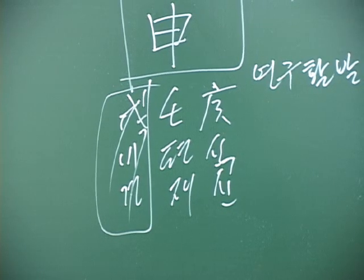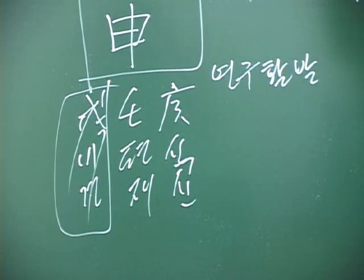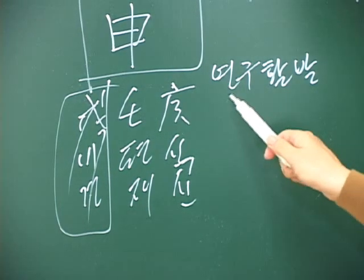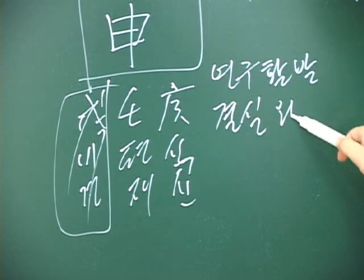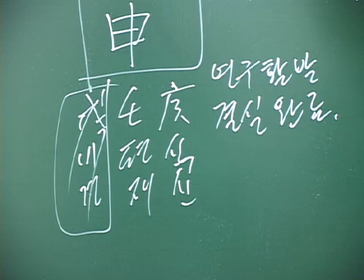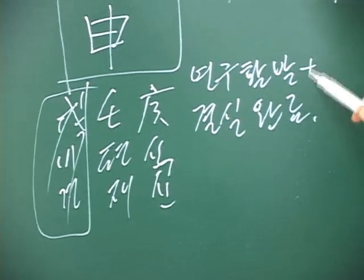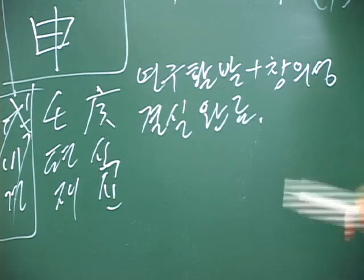우선 내부적으로 별 갈등이 없다. 식신이 궁리하고 편제가 마무리 짓고 결실하고서 완료. 결실로서 완료를 지어버립니다. 무신의 의미를 본다면 이와 같다. 그리고 연구 활발한 가운데 창의성이 돋보이네요. 창의성이 있다.